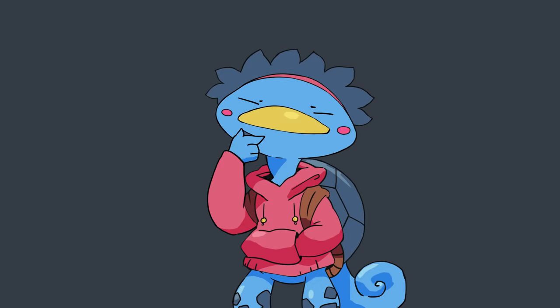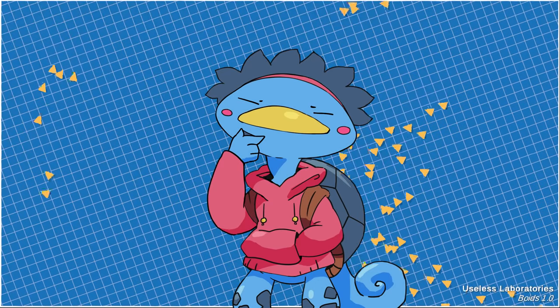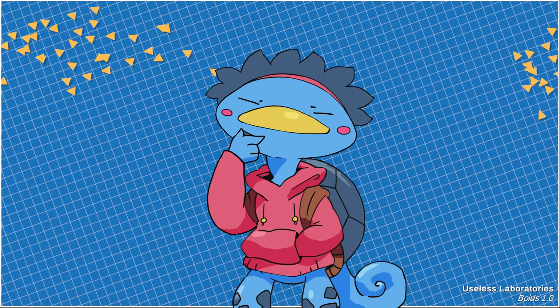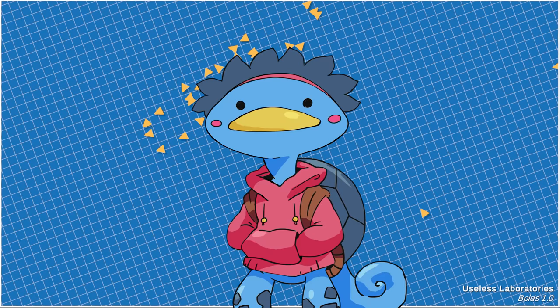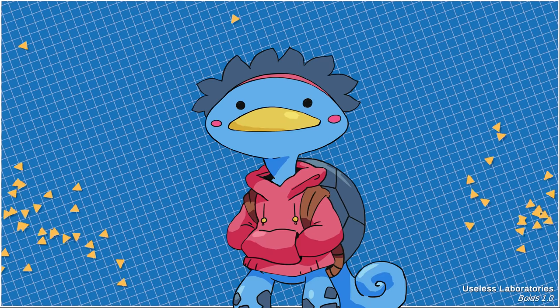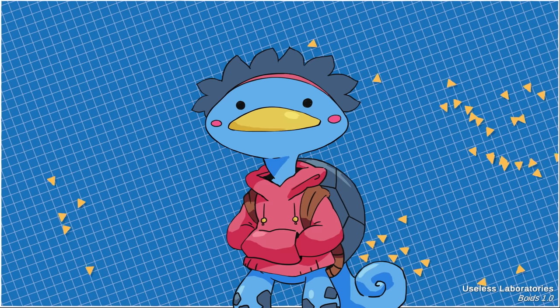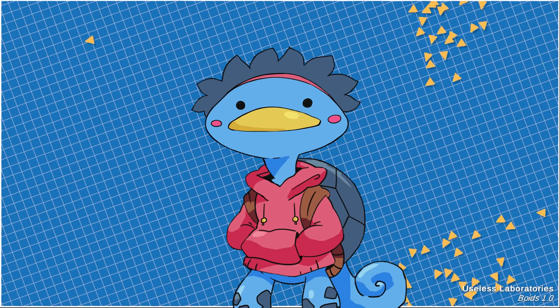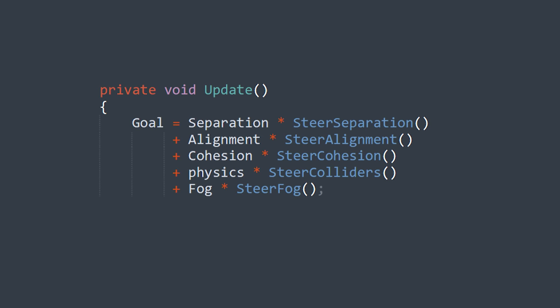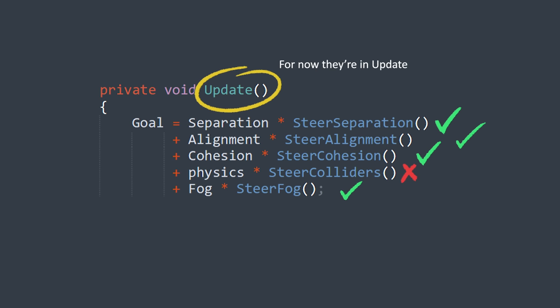The next step is parallelization. Right now we're computing the steering forces of every boid sequentially, when by definition each boid is independent from the others, meaning we could have a thread per boid — or more realistically a thread for a batch of 100 boids — to speed things up. Now the collider rule cannot be threaded since physics stuff must be called from the main thread, but separation, alignment, cohesion, and fog can all be moved to a thread, provided you cache some values like transforms and such.